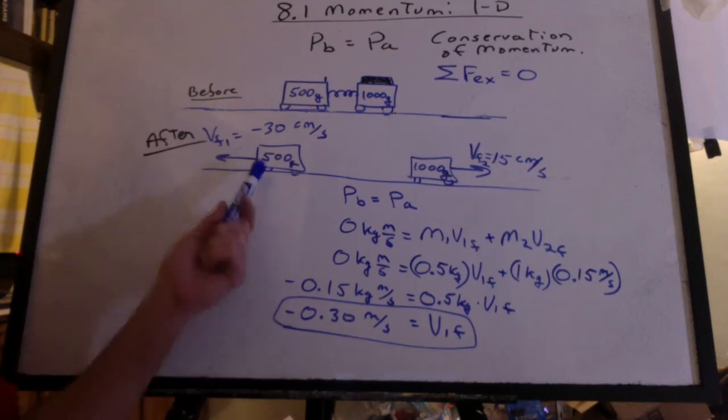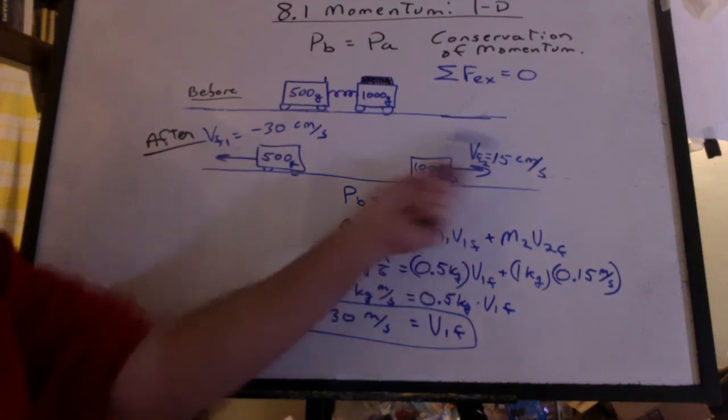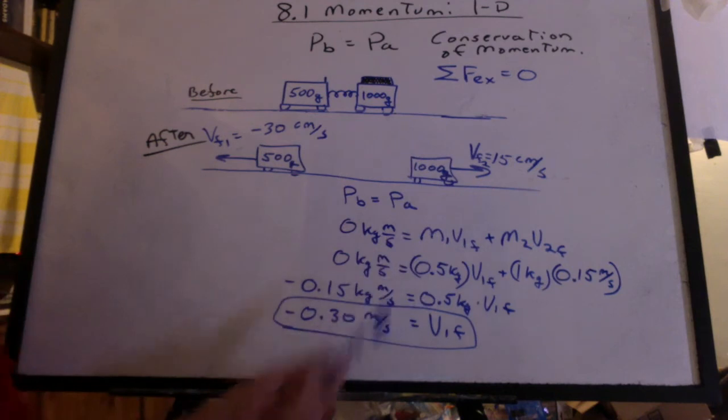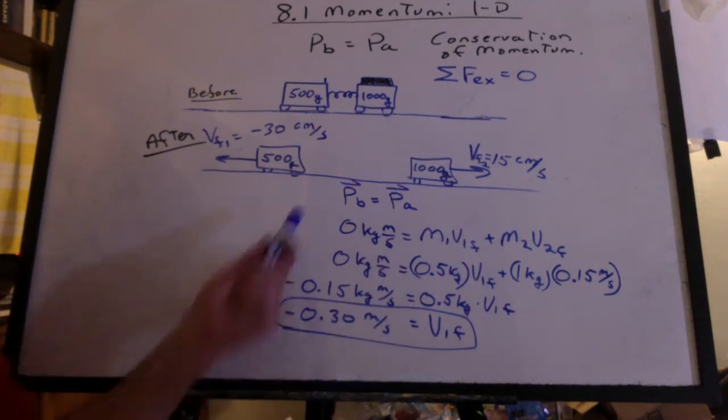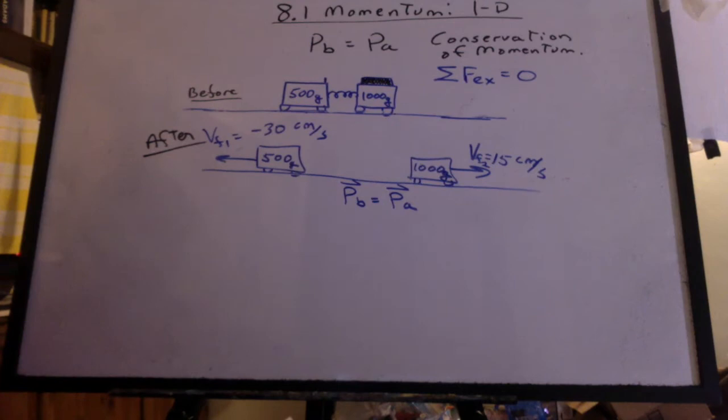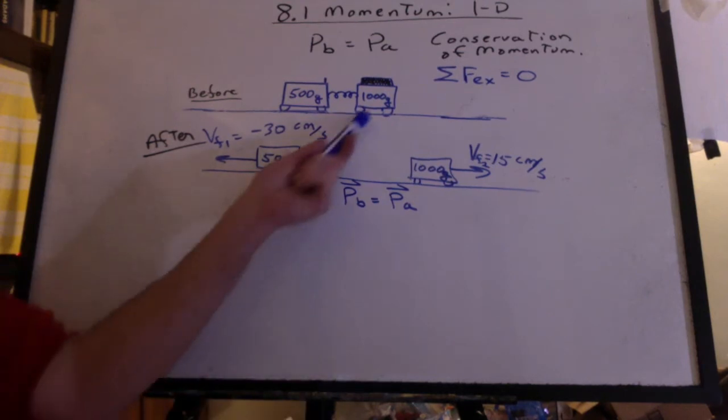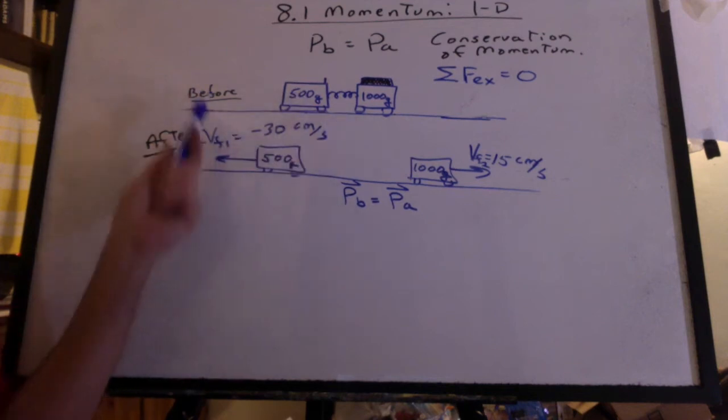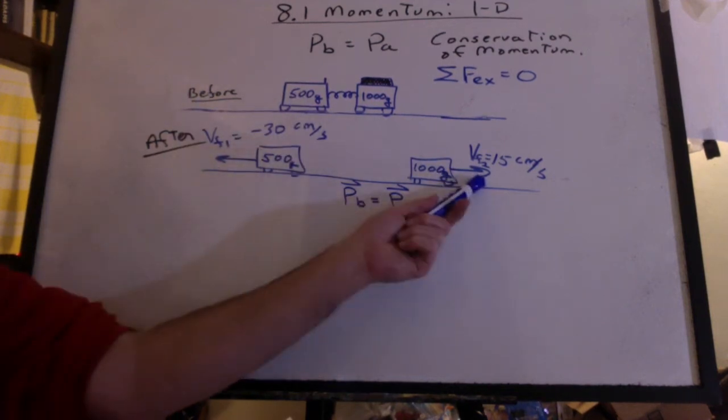Now, just check this out. 500 grams times negative 30 centimeters per second would be a negative momentum. Adding to this positive momentum would give us zero. Remember, momentum is a vector. Now, everything we've done agrees with our observation that if the mass is cut in half, it's going to have twice the acceleration. So it ends up with twice the velocity at this time.